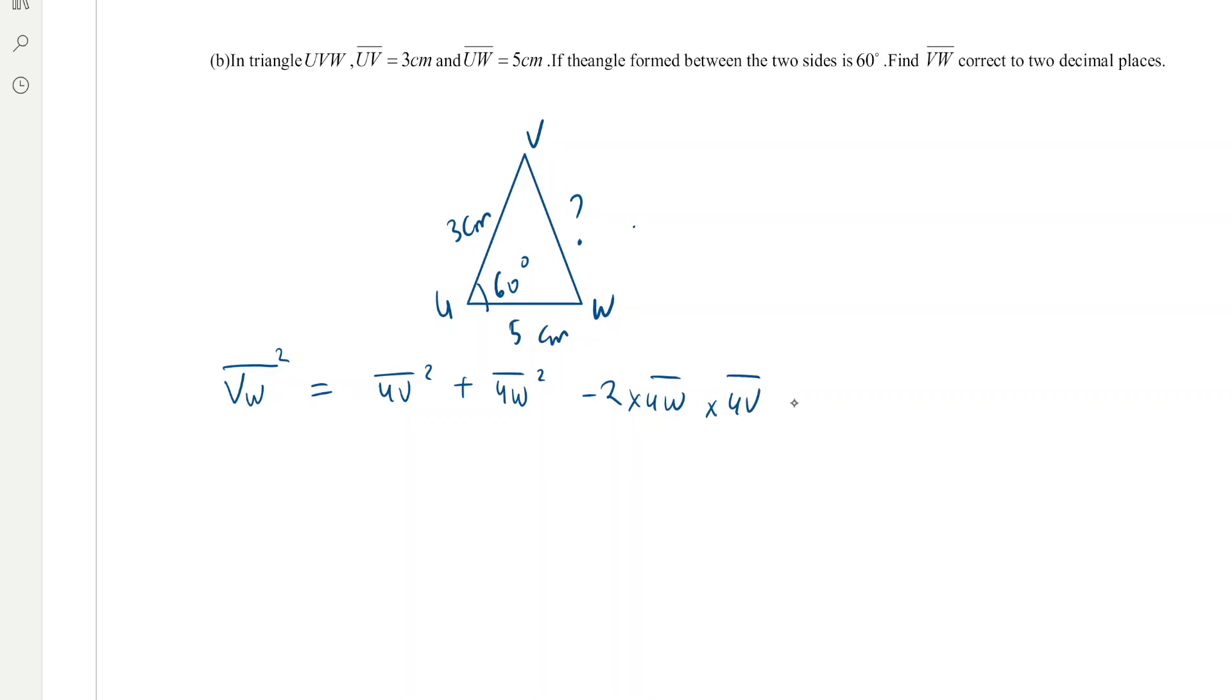So VW square will be UV which is 3 square, plus UW which is 5 square, minus 2 times UW which is 5 times UV which is 3 cosine of 60.